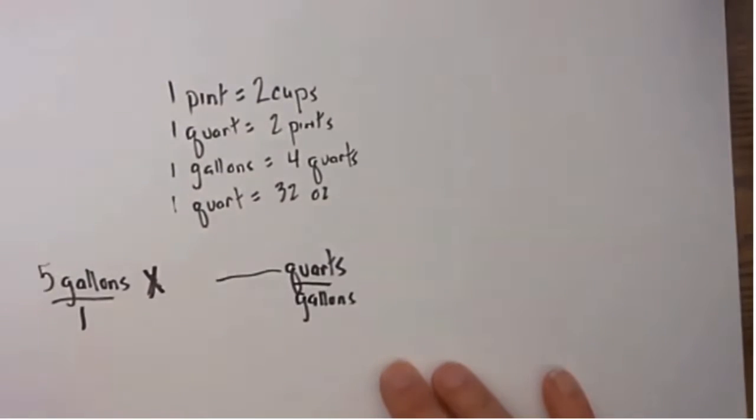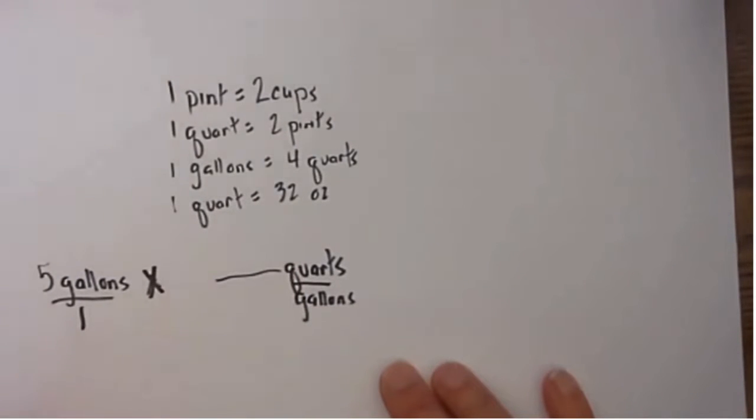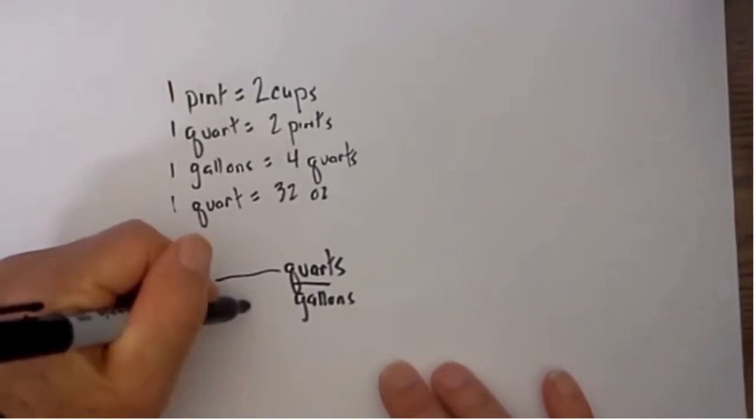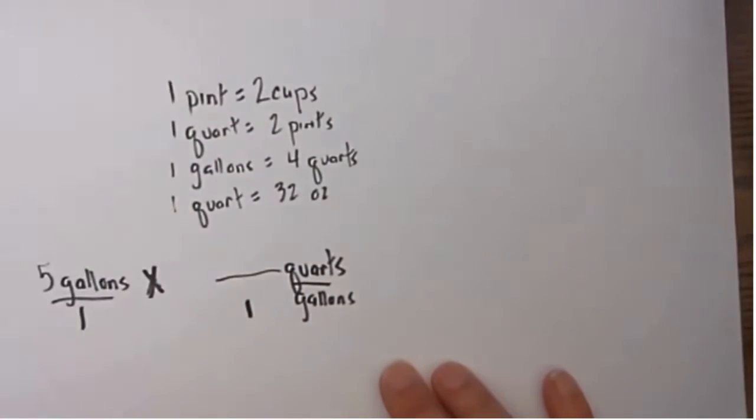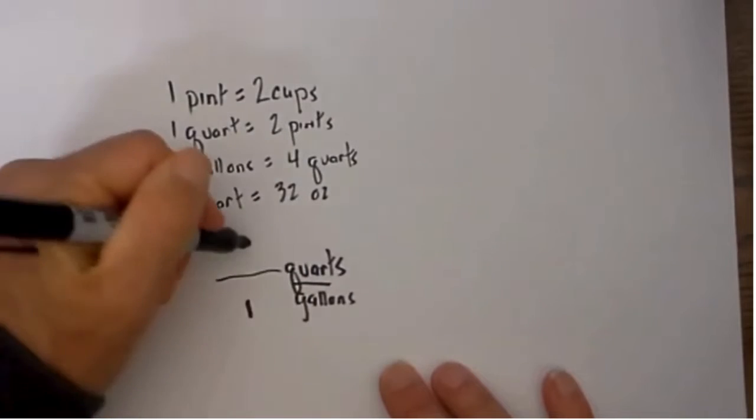I next ask myself, which is larger, gallons or quarts? Well, I know gallons are larger than quarts. So 1 gallon, I would place a 1 by the gallon and then if I have 1 gallon, how many quarts is that equal? And I know here that 1 gallon is equal to 4 quarts.